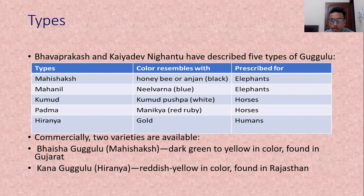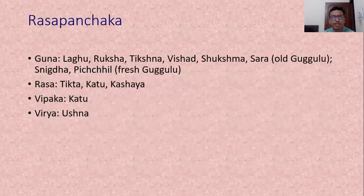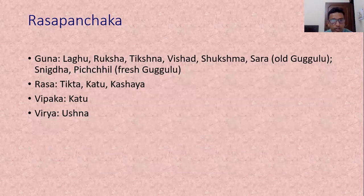Bhaisa Gugul is dark green to yellow in color and is mainly found in the Gujarat market. Kana Gugul is reddish yellow and is mainly found in Rajasthan. As per procurement, there are two types: Fresh Gugul and Old Gugul or Purana Gugul. Purana Gugul is laghu, ruksha, tikshna, sukshma, vishat and sara in properties. Fresh Gugul is snigdha and pichil.